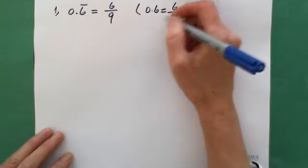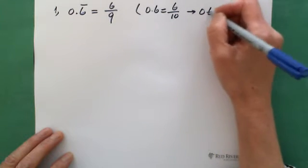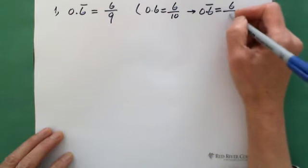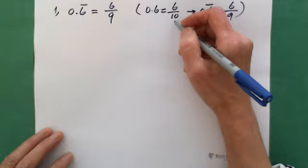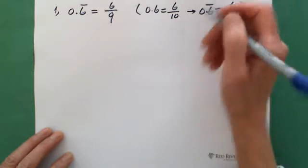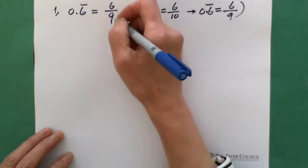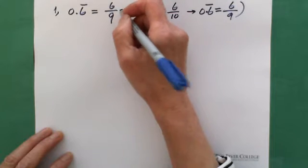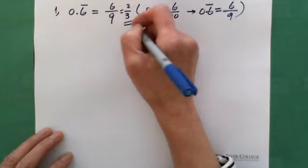So if you have 0.6 repeating, I remember the pattern — it's 6 over 9. The denominator 10 is for a terminating decimal; if the denominator is 9, it becomes a repeating decimal. After you get 6 over 9, you simplify: divide top and bottom by 3, and you get 2 thirds. That's the answer.